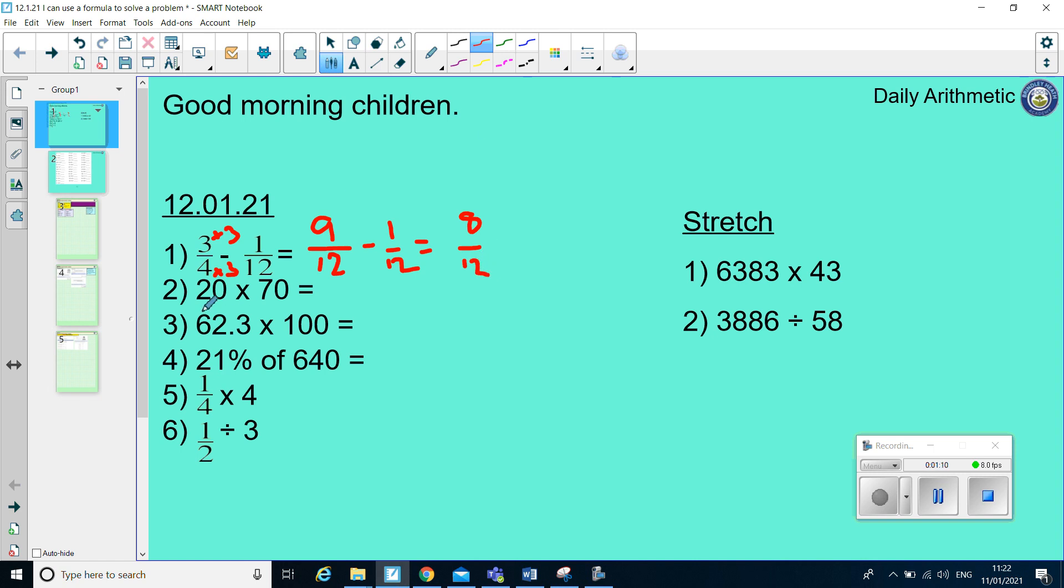Question 2, 20 times 70, we'd do 2 times 7 and then put 2 zeros on the end of our answer, because there are 2 zeros in our question. So, 2 times 7 is 14, and we want 2 zeros on the end, so our answer is 1,400.